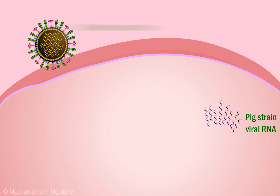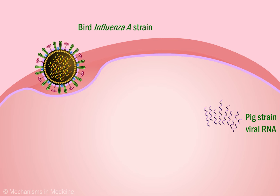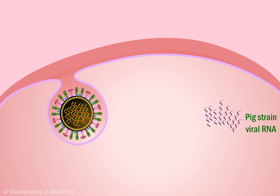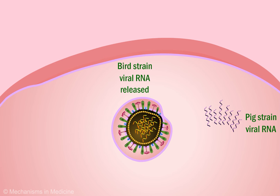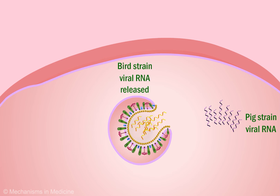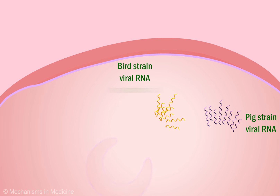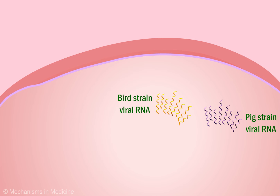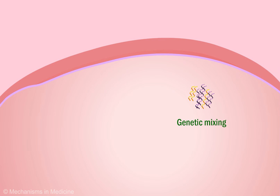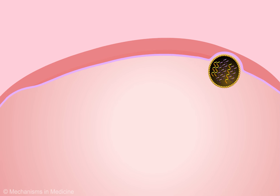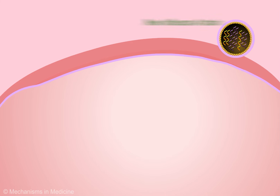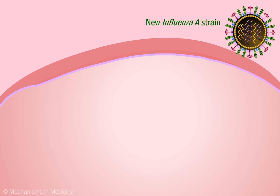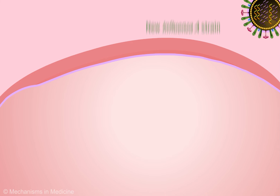Secondly, a bird strain of influenza virus A infects the same cell and mixes with the already present pig strain gene segments. Mixed viral gene segments from bird and pig strains re-assort into a new influenza A virus strain, which may further spread to the human population.